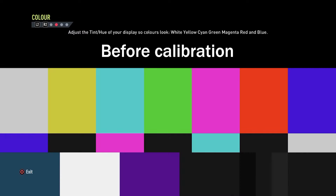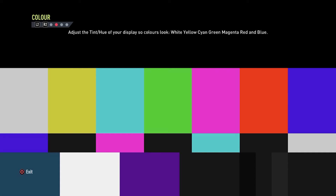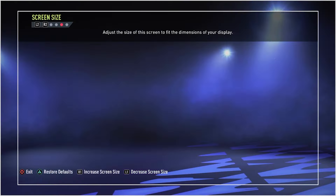The second calibration option is color. If you'd like to know about color settings for your PlayStation or for FIFA, let me know in the comments below and I'll make a video about it.